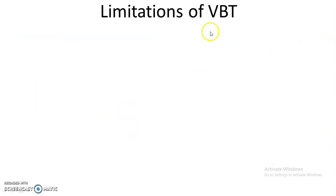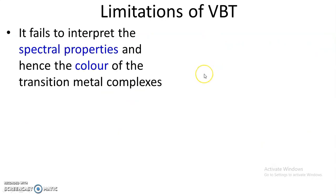First, let us look at the limitations of valence bond theory. Valence bond theory fails to interpret the spectral properties and hence the color of transition metal complexes. Why a particular complex has a specific color remained unexplained on the basis of valence bond theory.